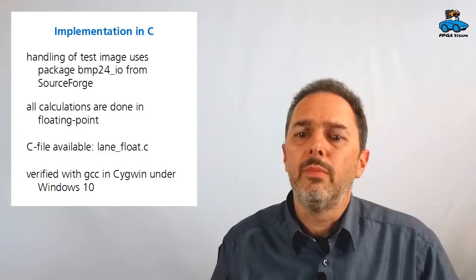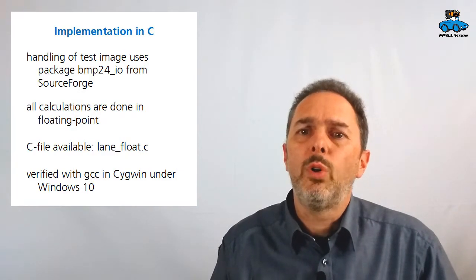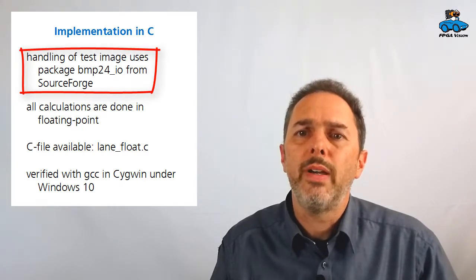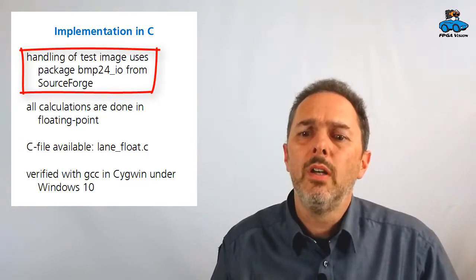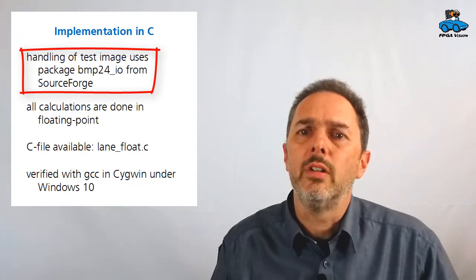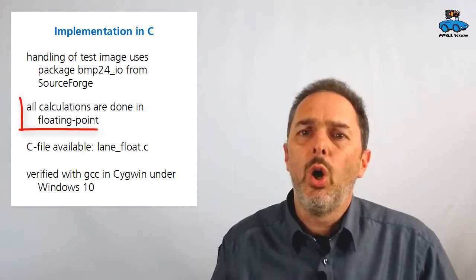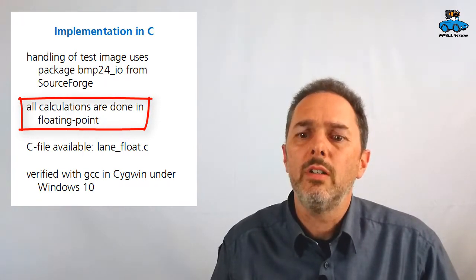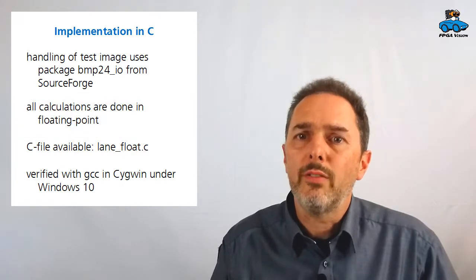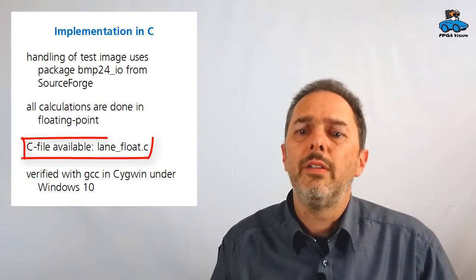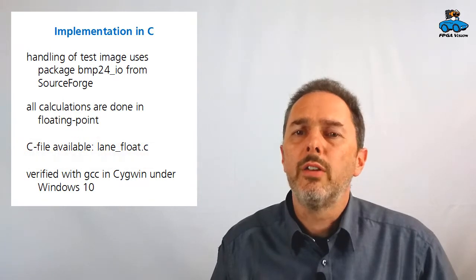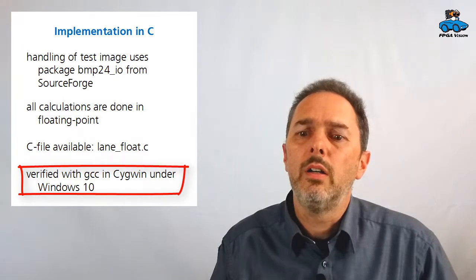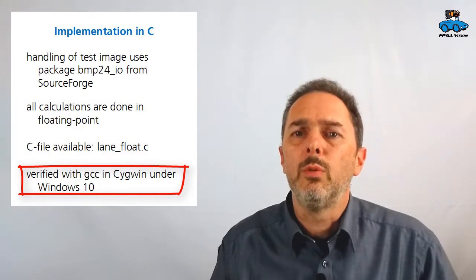For opening and handling the test images, we use a package called bmp24-io, which is available on SourceForge. All calculations have been done in floating point, because that's at the moment easier for us to do. You can find the C file under the name of LaneFloat, and it has been verified with the GNU C compiler on Cygwin under Windows 10.